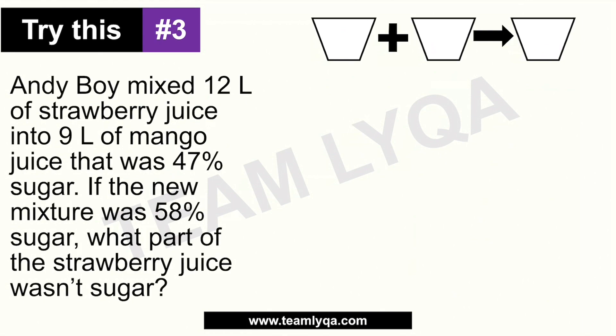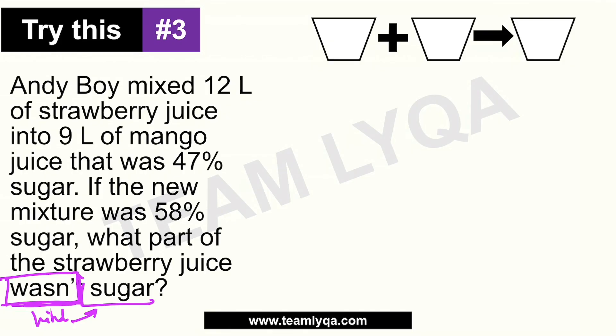Dito na tayo sa number 3. Now, there's a catch here, much like yung ginawa natin last time, kasi halos kahawig din yung tanong pero may ibang dimension siyang hinahanap. Sabi dito, Andy Boy — hi kay Andy Boy — Andy Boy mixed 12 liters of strawberry juice into 9 liters of mango juice. So naging strawberry mango yung juice niya. Yung 9 liters na yan, 47% sugar siya. Yung new mixture ay naging 58% sugar. Ang tinatanong: what part of the strawberry juice wasn't sugar? I-emphasize ko itong hinahanap — hindi sugar. Anong pwede natin gawin dyan? Kukulin natin yung sugar, tapos yung difference nila sa 100%, yun yung totoong sagot.